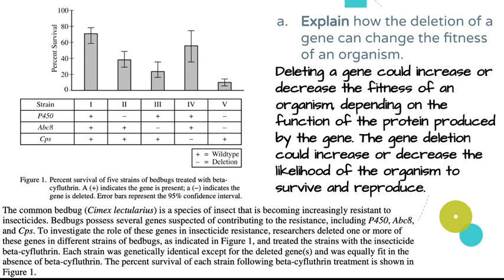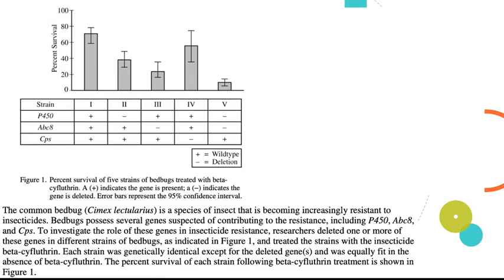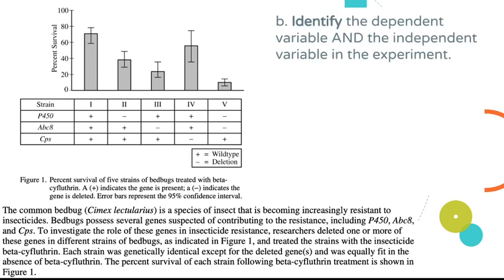For example, if deleting a gene eliminates a protein in the exoskeleton that reduced insecticide absorption, the organism becomes more likely to absorb the insecticide, decreasing its fitness. Conversely, if a deletion somehow neutralizes insecticide at the molecular level, that could increase fitness. It really depends on the function of the affected protein.